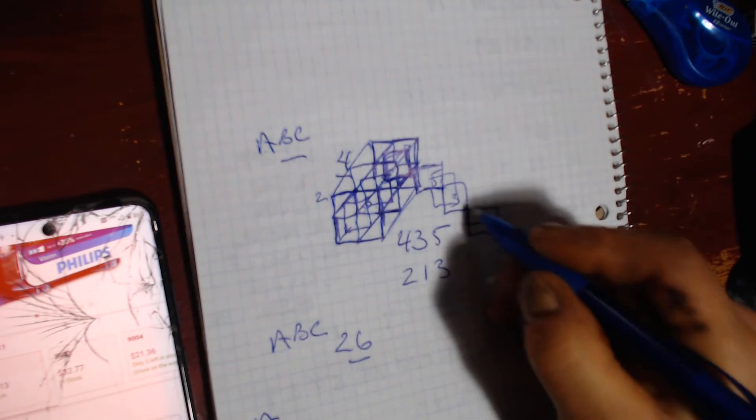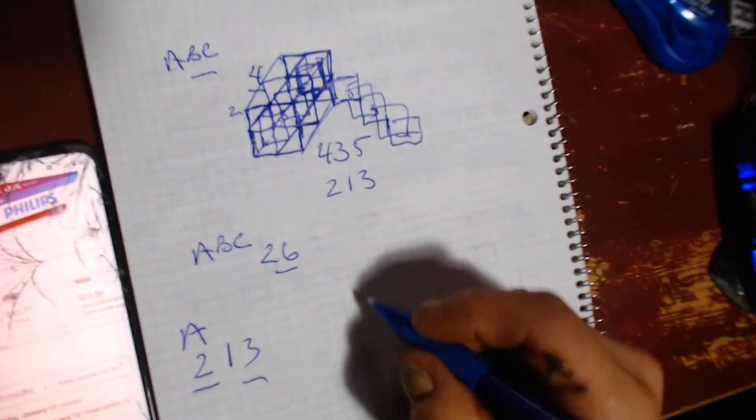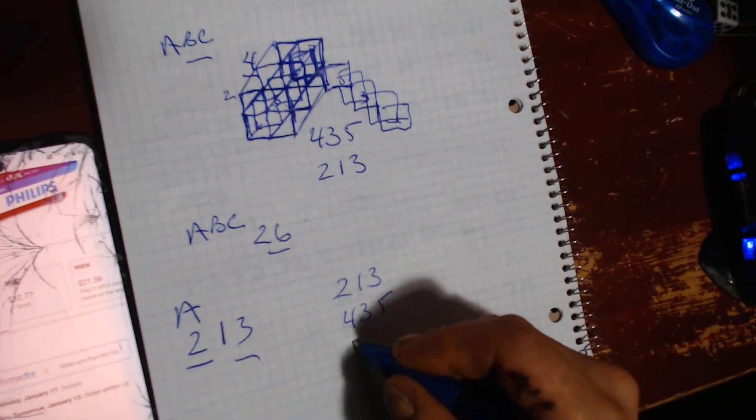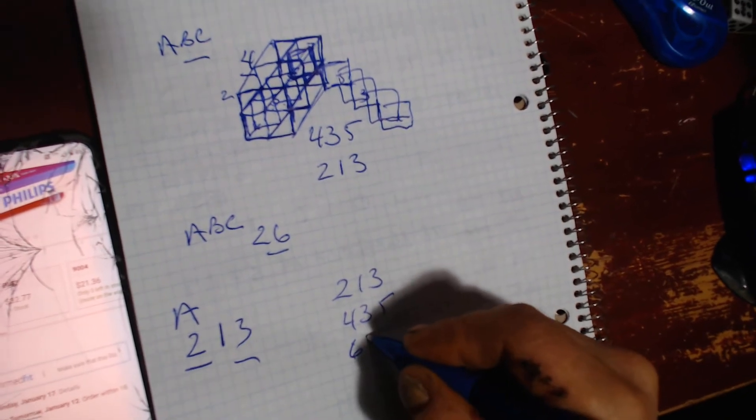And then you're going to have your in-between over here. Well, on this side, it's going to be two with one, three. It's going to be four with three, five. It's going to be six with five, seven.